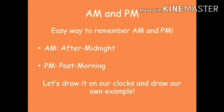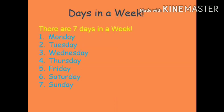Now we will talk about weeks. How many days are there in a week? There are seven days in a week: Monday, Tuesday, Wednesday, Thursday, Friday, Saturday, and Sunday. You go to school from Monday to Friday, and you have a holiday on Saturday and Sunday. So Saturday and Sunday are weekends, and Monday to Friday is a weekday.